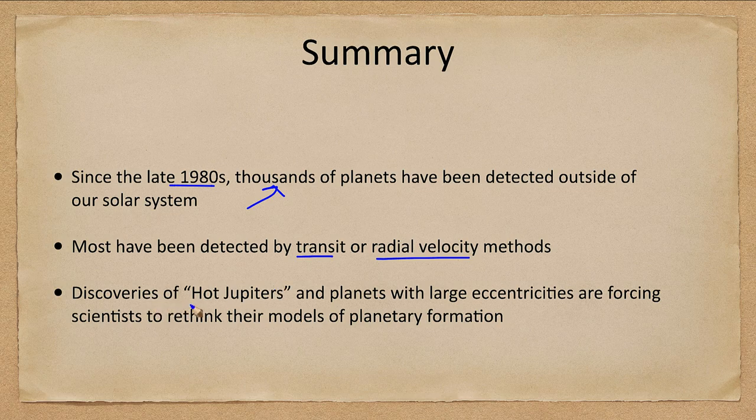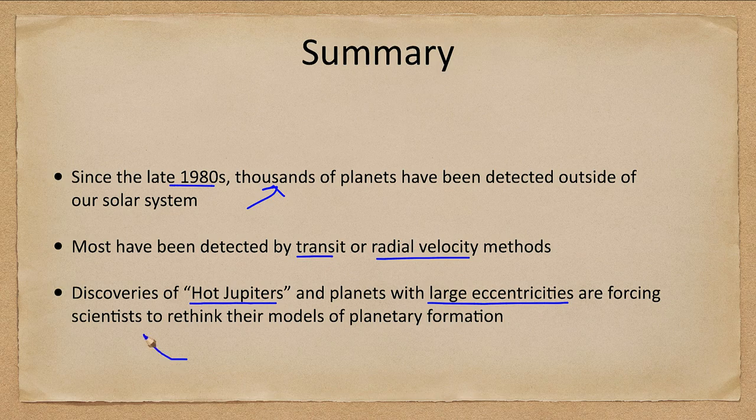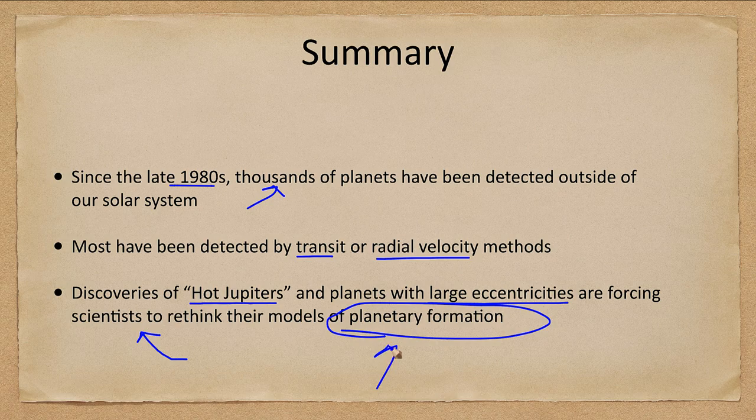The discovery of things like hot Jupiters and planets with very large eccentricities are really causing astronomers to rethink their models of planetary formation. How do planets actually form?